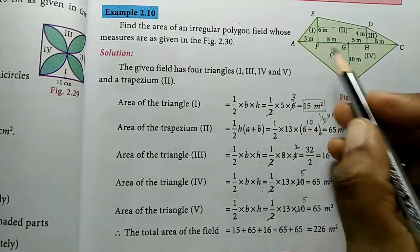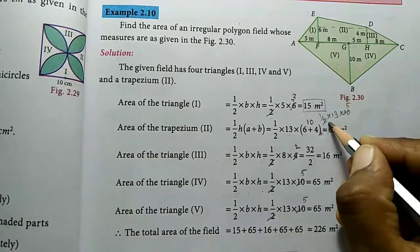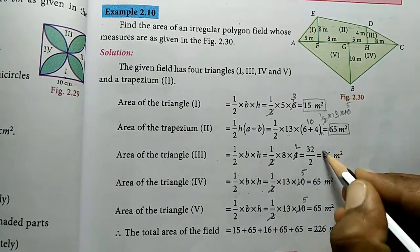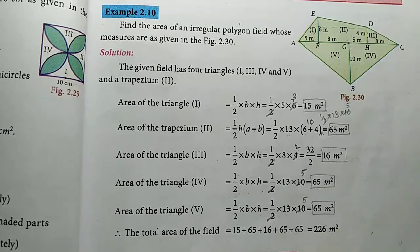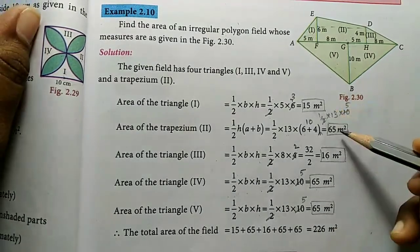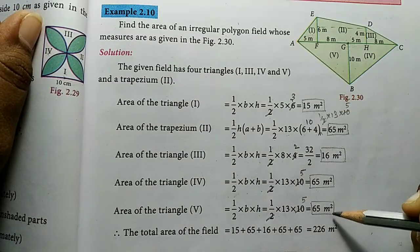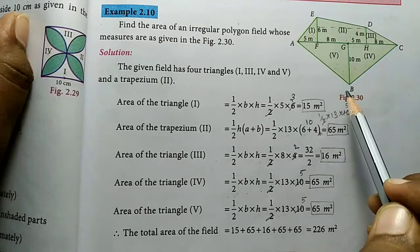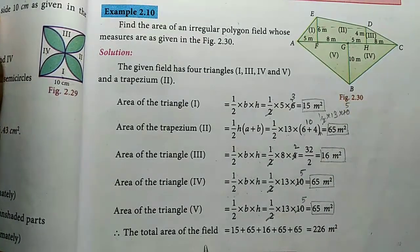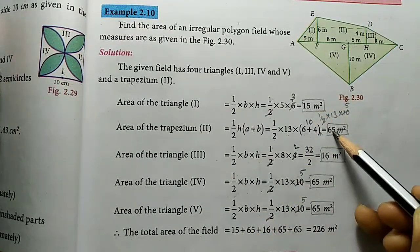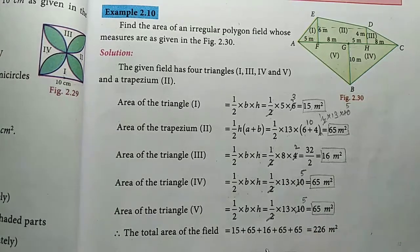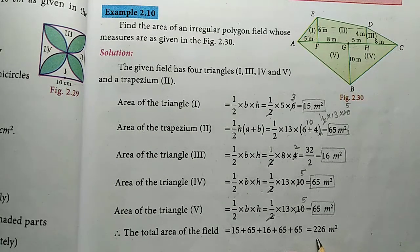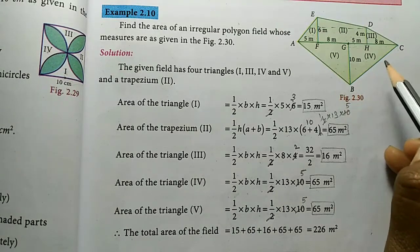So total area of the field: Triangle 1 = 15 m², Trapezium 2 = 65 m², Triangle 3 = 16 m², Triangle 4 = 65 m², Triangle 5 = 65 m². Adding all values: 15 + 65 + 16 + 65 + 65 = 226 square meters. This is the area of the irregular polygon field.